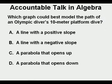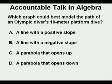Here is a recent problem in my class that was the cause of a lot of Accountable Talk in algebra around our school: Which graph could best model the path of an Olympic diver's 10-meter platform dive? A: a line with a positive slope. B: a line with a negative slope. C: a parabola that opens up. D: a parabola that opens down.